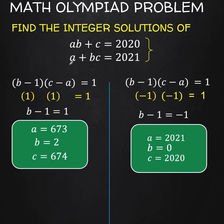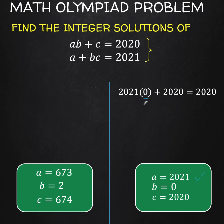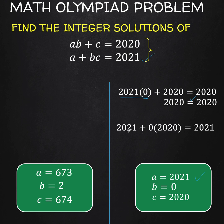Let's verify by substituting back into the original equations. For the first solution set with A equals 2021, B equals 0, and C equals 2020: in equation 1, the AB term is 0, leaving 2020 equals 2020, which is correct. In equation 2, the BC term is 0, leaving 2021 equals 2021, which is also correct.